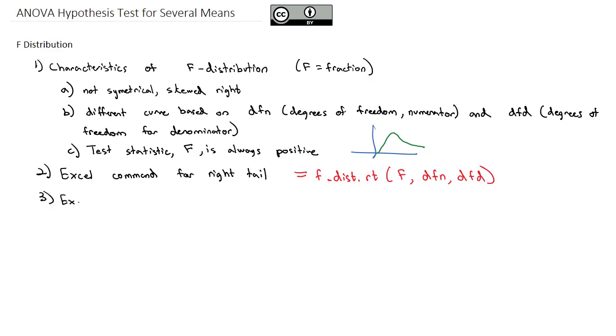So for example, if we want to find the area to the right of F equals 1.53, if the degrees of freedom for the numerator equals 11 and the degrees of freedom for the denominator is equal to 14.